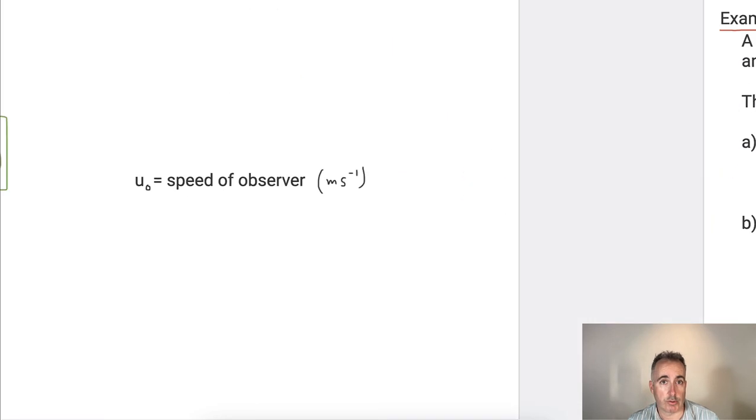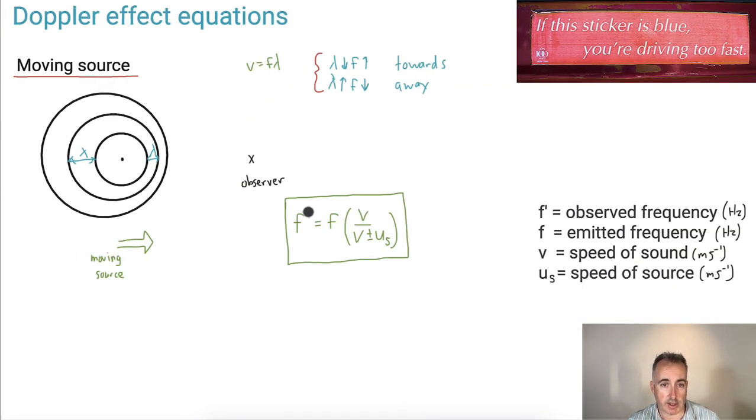So we've learned how to use this equation, right? This observed frequency versus the emitted frequency. We've learned that if you have a moving source, we'll use this equation. If you have a moving observer, we'll use this.